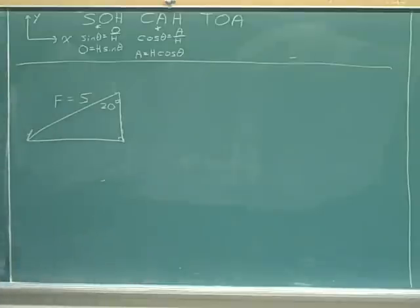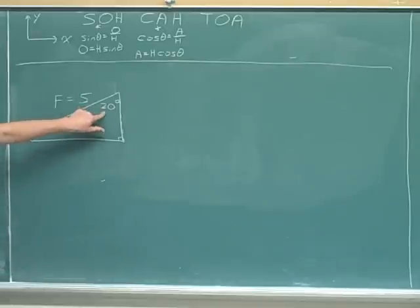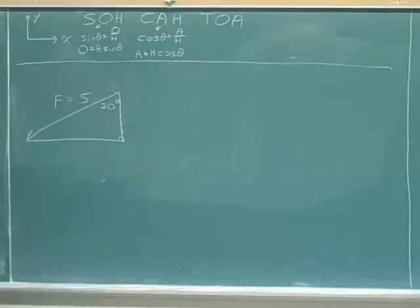When you draw your right triangle, you can usually draw it either above or below the overall vector. Try to put the right triangle in the place that includes the angle that you were given — that makes the problem a little more straightforward.